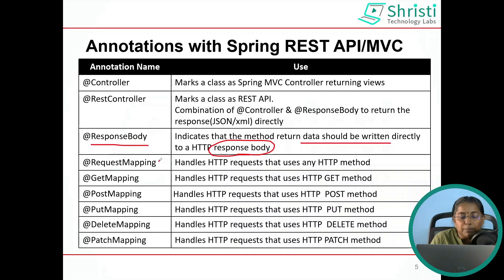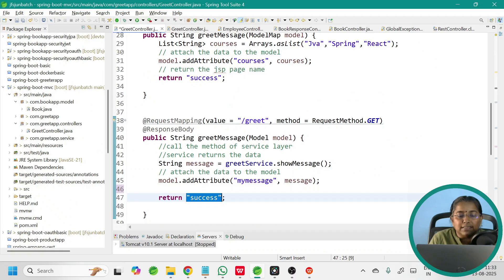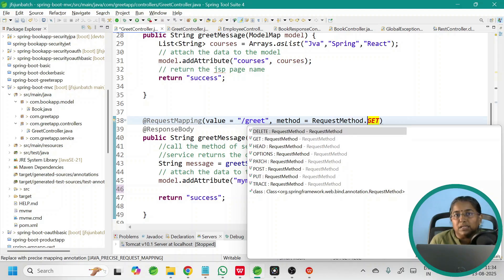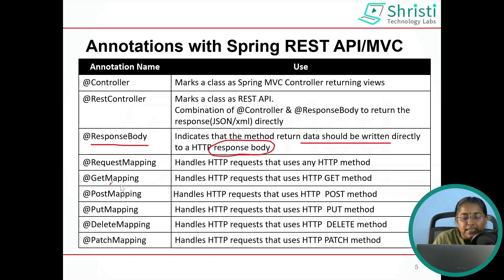@RequestMapping can be used with both MVC applications and REST APIs. It handles HTTP requests that use any HTTP method. The URL pattern and HTTP method are specified within the annotation. The next set of annotations — @GetMapping, @PostMapping, @PutMapping, @DeleteMapping, and @PatchMapping — each handle HTTP requests for their respective HTTP methods.